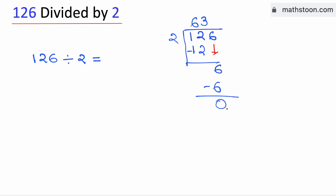As we have obtained the remainder 0, we will stop. Therefore, 126 divided by 2 is equal to 63, and this is our final answer.